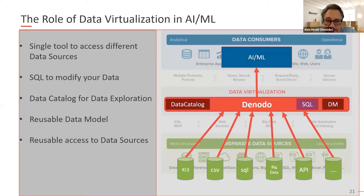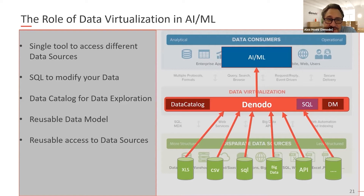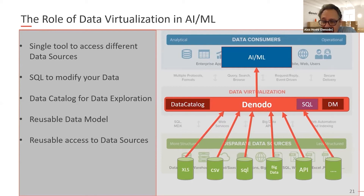With Denodo, you get a tool to access all kinds of different data sources — spreadsheets, CSV files, SQL databases, big data environments, business applications, and APIs. You can keep those connections through a very strong data security concept. Instead of repeatedly requesting data access from your IT department and waiting weeks, you request access once, and the security model ensures you only see information relevant to your work — with no breach of compliance or confidentiality.